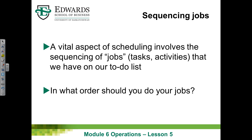Let's turn to job sequencing, which is an important aspect of scheduling. You're taking tasks or activities on your to-do list and determining in what order you should do those jobs. This may relate to high school students who have many things on their to-do list — a calculus exam, a social studies project, a history paper, a science experiment. You want to know: should you do the shortest one first? The longest one first? In what order should you do them, and does sequencing really add value?